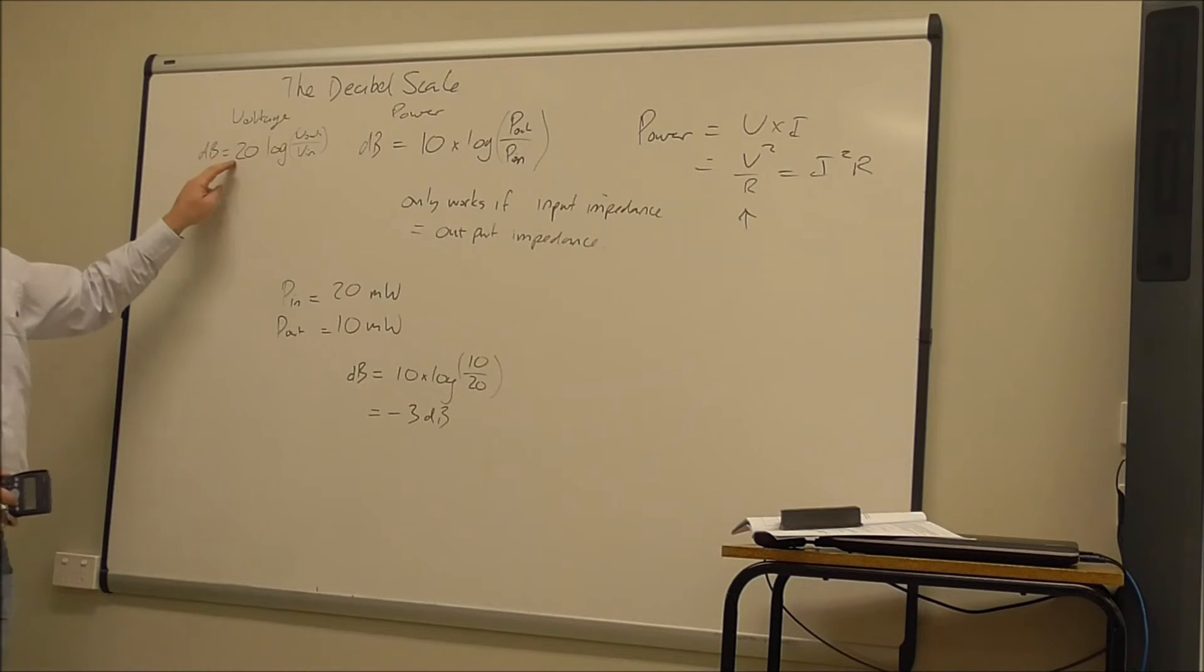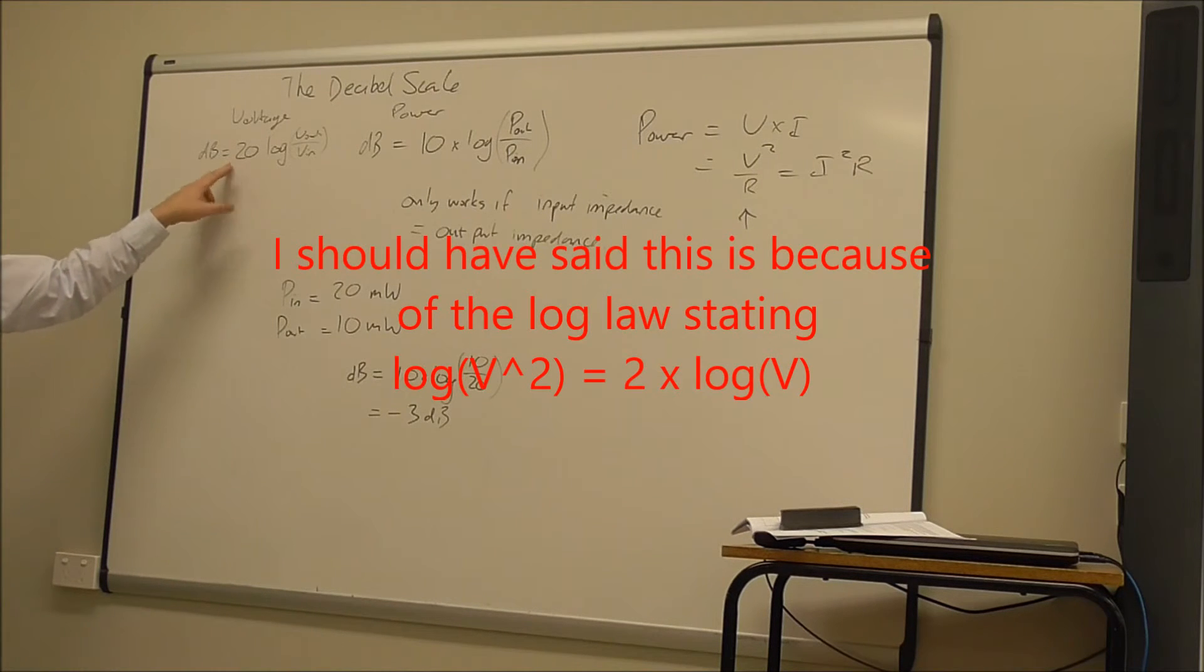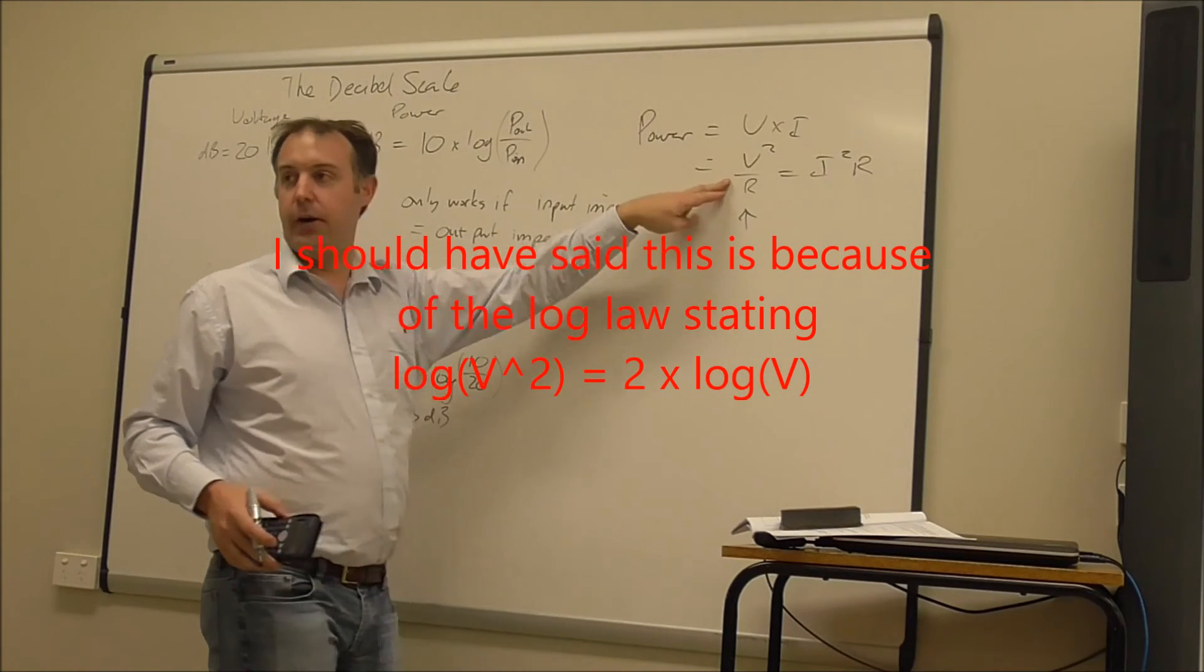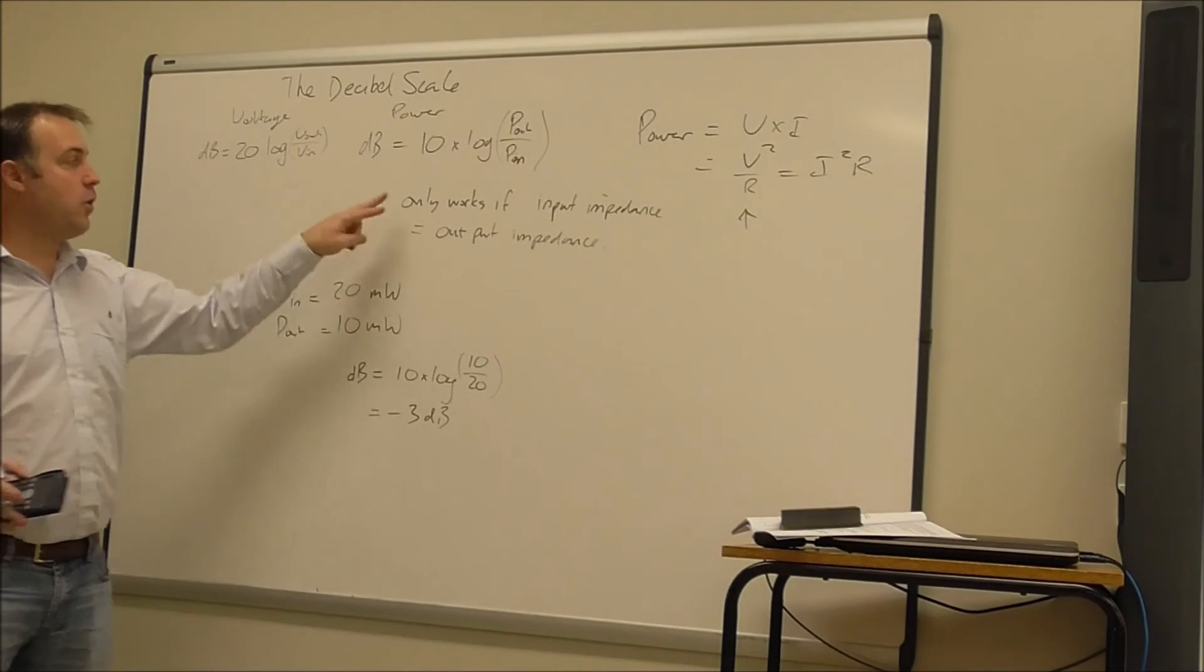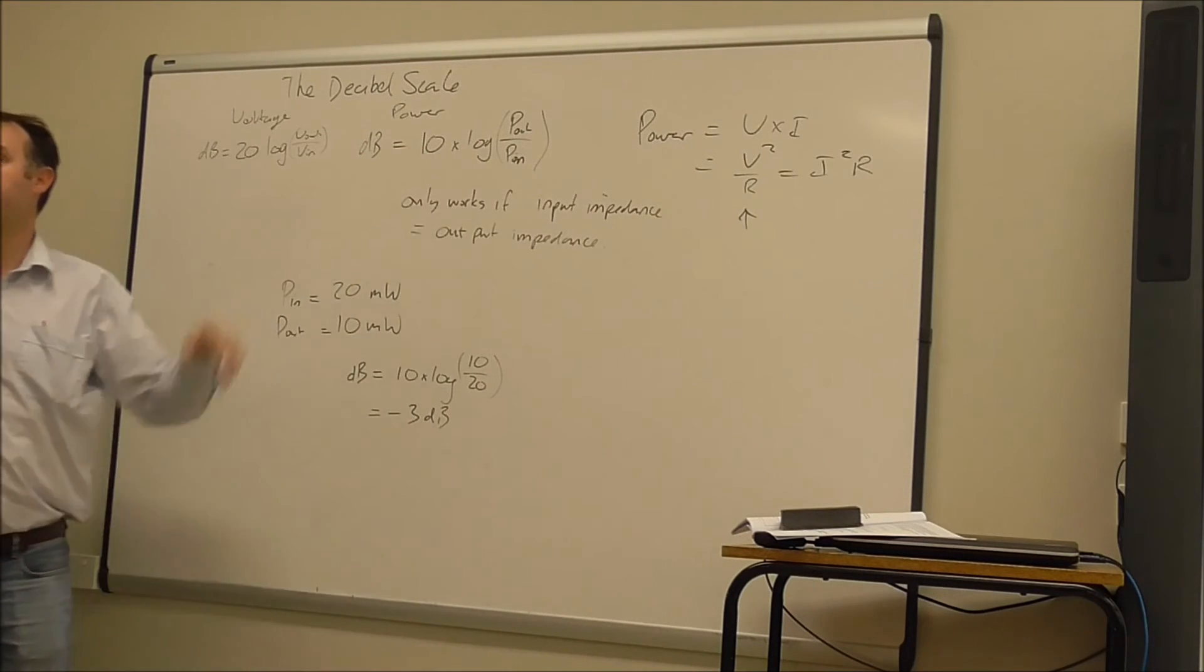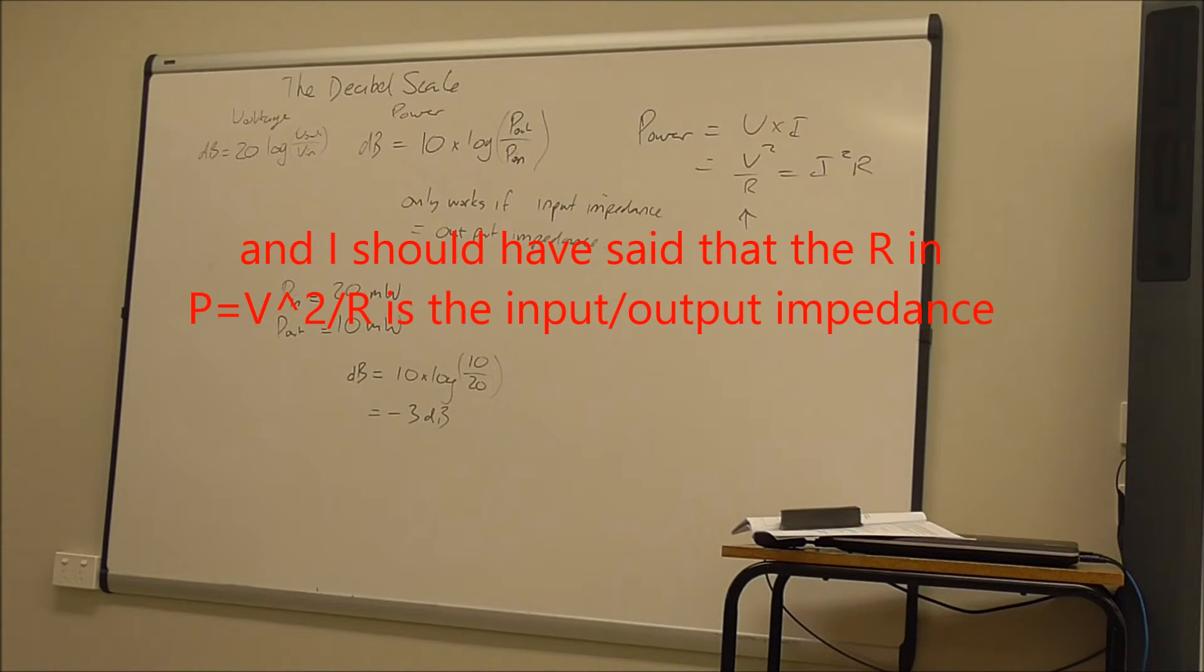And so these two formulas, they really are the same. Because they rely on this formula here for power, V squared on R. And that is why this input impedance must equal the output impedance for this formula to work.